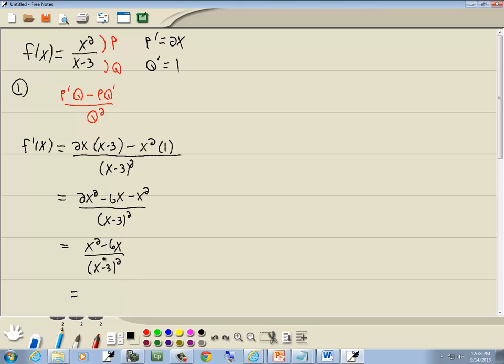Now I'm going to factor an x out, and that gives us x times x minus 6, over x minus 3 squared. Step 2, set your derivative equal to 0, and solve it. So we've got x times x minus 6, over x minus 3 squared, equal to 0.